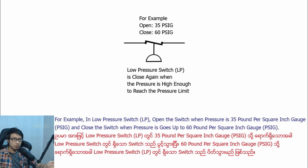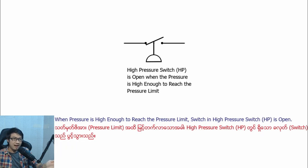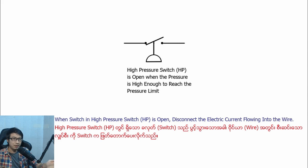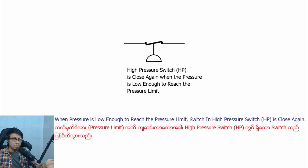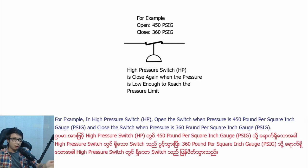For example, in the low-pressure switch, the switch opens when pressure is 35 PSIG and closes when pressure goes up to 60 PSIG. When pressure is high enough to reach the pressure limit, the high-pressure switch opens and disconnects the electric current flowing into the wire. When pressure drops low enough to reach the reset limit, the high-pressure switch closes again. For example, in the high-pressure switch, the switch opens when pressure is 450 PSIG and closes when pressure drops to 360 PSIG.